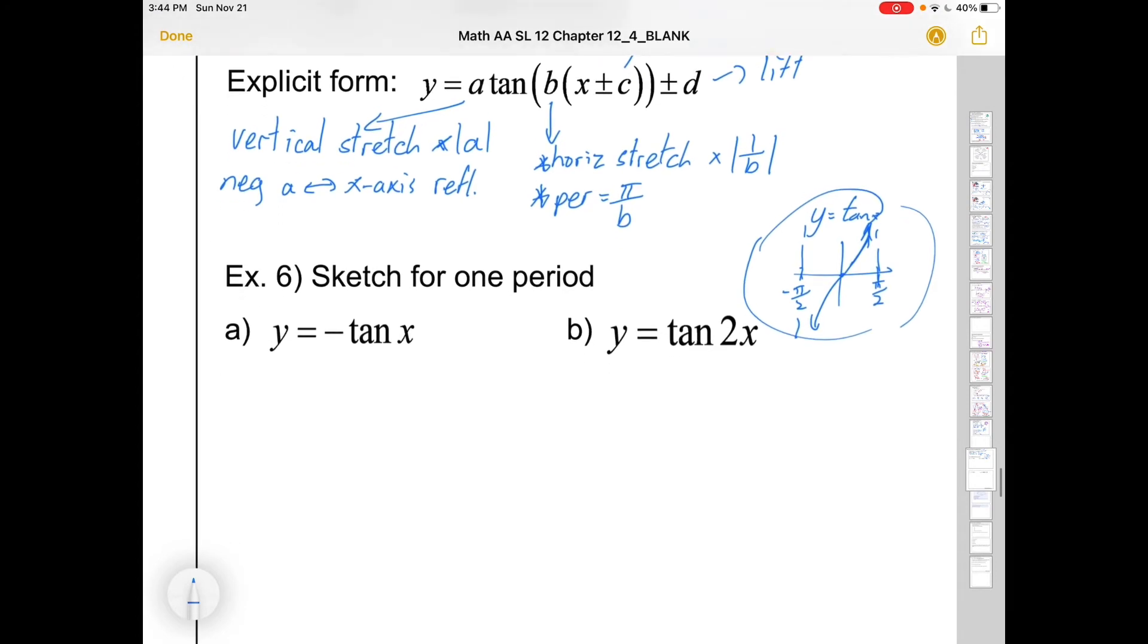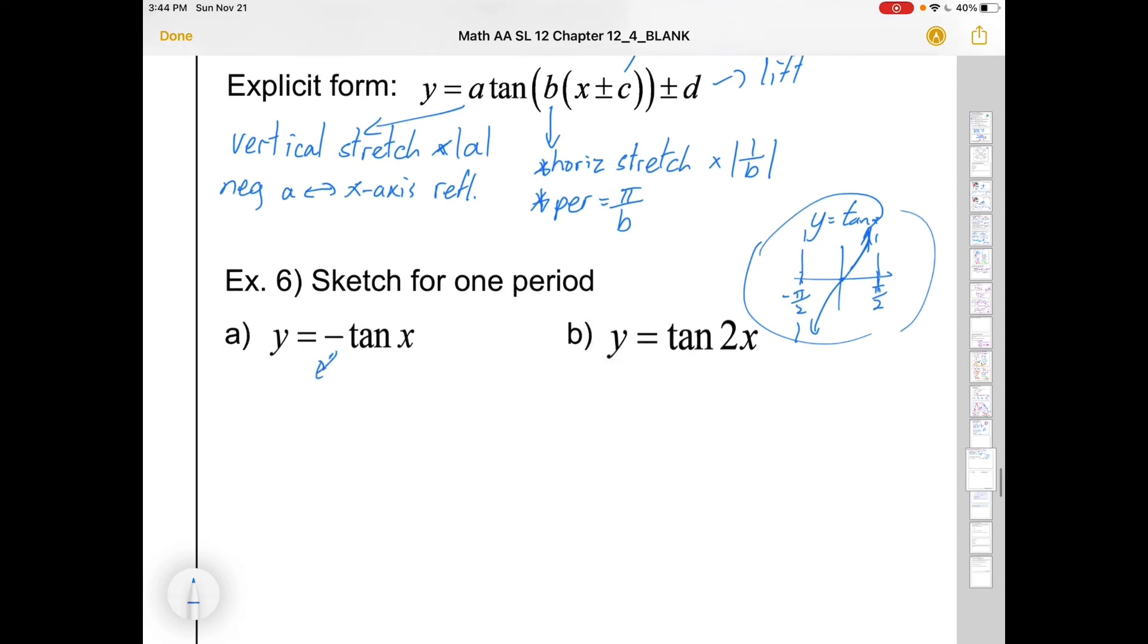So if I were to graph negative tan x, that would tell me that I have an x-axis reflection. So I take the basic one and I just shift it upside down. An x-axis reflection doesn't do anything to the asymptotes because if you flip a vertical asymptote upside down, it still looks the same. So I'm okay if all you show here is that it's going through the origin and that instead of going up as we go to the right, it appears to be going down.